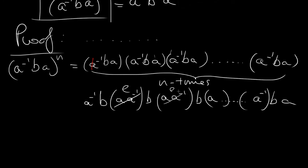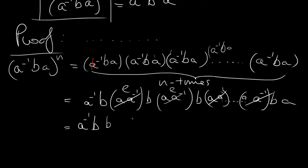We know that a and a⁻¹ are inverses of each other, so each pair aa⁻¹ becomes e and we can cancel them out. If we had another term it would give another a⁻¹ and another a, which also cancel. So all the a and a⁻¹ pairs in the interior are cancelled, and what we're left with is the leading a⁻¹, then b, then another b, then another b...